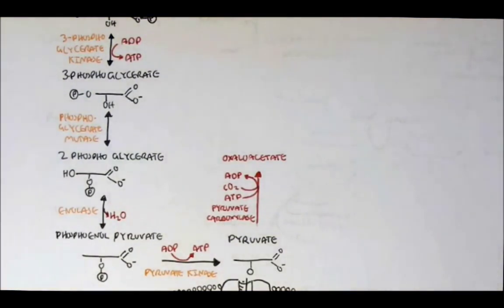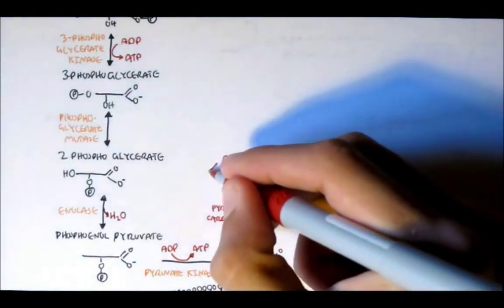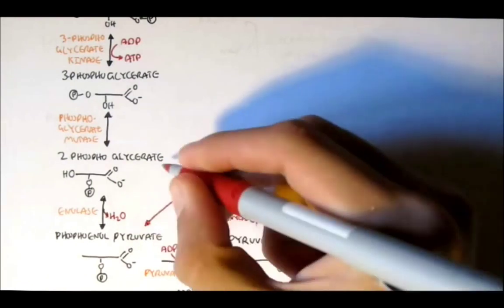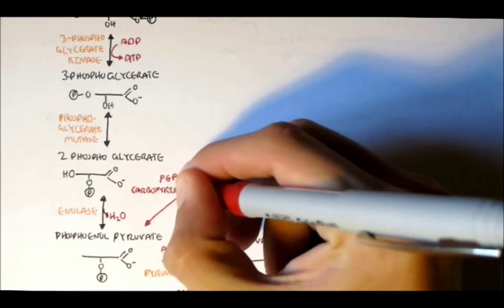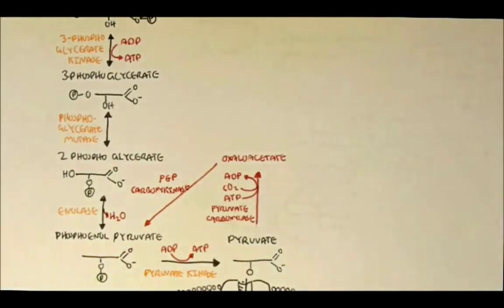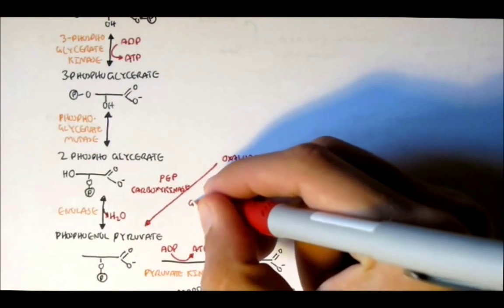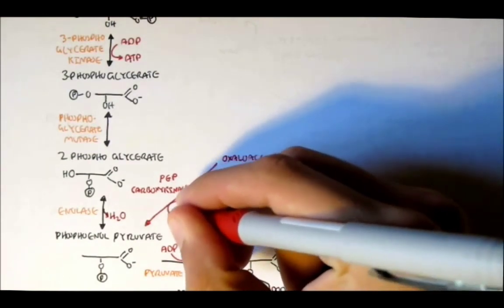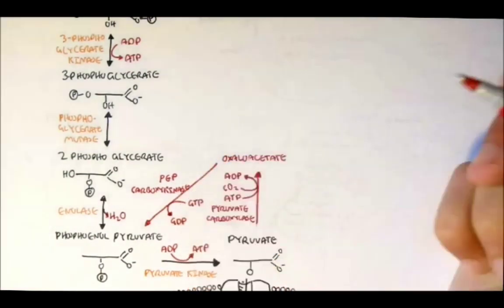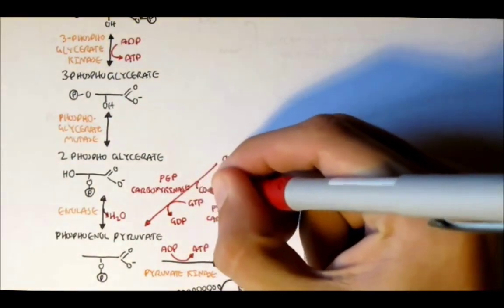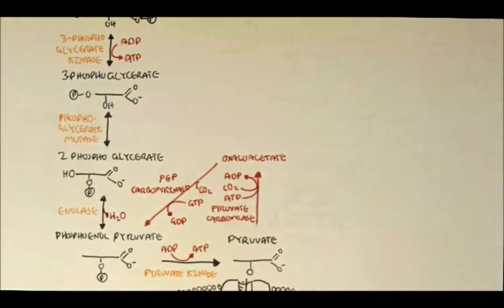So the second reaction: oxaloacetate with the enzyme phosphoenolpyruvate carboxykinase will then convert to phosphoenolpyruvate and it gets its phosphate group from GTP. And also the carbon dioxide group which was previously lost is obtained back. So in this reaction alone quite some energy is invested.